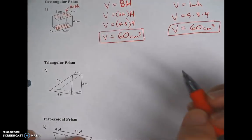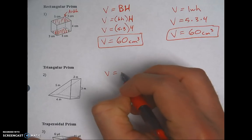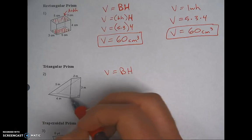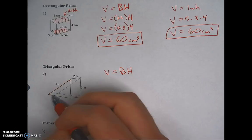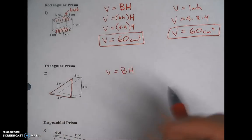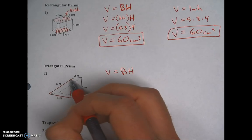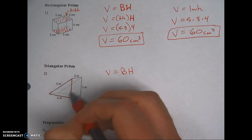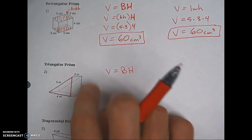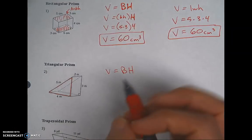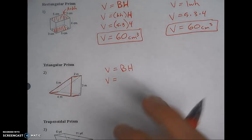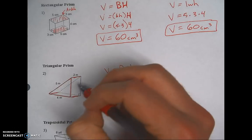For the triangular prism, we use big B times big H. The bases are the triangles — the triangle in the front and the triangle in the back are exactly the same size and run parallel. This triangle has sides of 5, 4, and 3. The 2 is how far apart those triangles are — the big H. Be careful: don't just pick the measurement that looks up-and-down; you have to connect the bases.